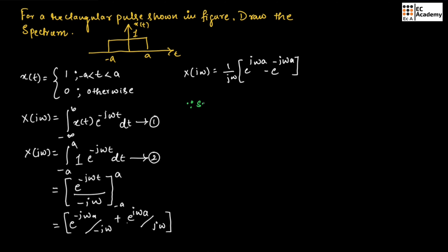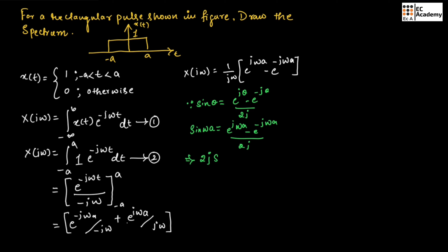Since we know sin(θ) can be written as exponential to the power of jθ minus exponential to the power of minus jθ, divided by 2j, we can write sin(ωA) equals exponential to the power of jωA minus exponential to the power of minus jωA, divided by 2j. So from this, 2j·sin(ωA) equals exponential to the power of jωA minus exponential to the power of minus jωA. In the above equation, in place of this term, we can write 2j·sin(ωA). Therefore, X(jω) equals 1 by jω into 2j·sin(ωA).